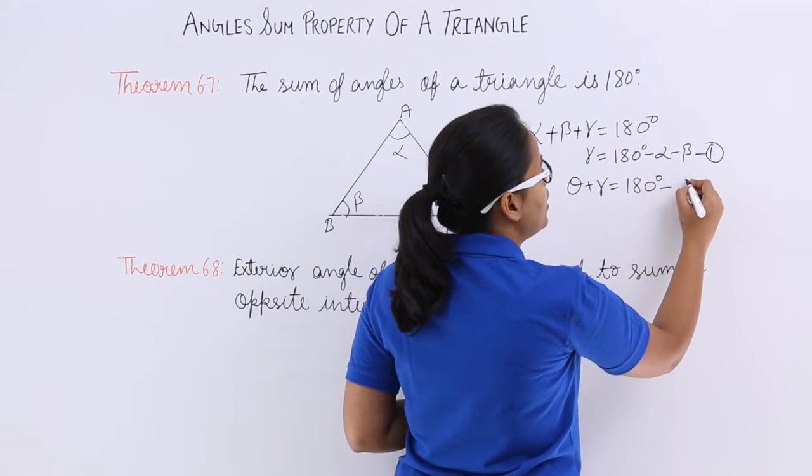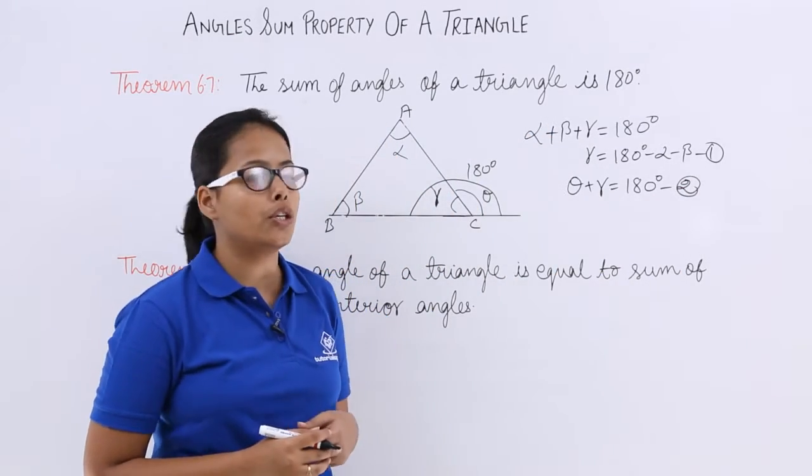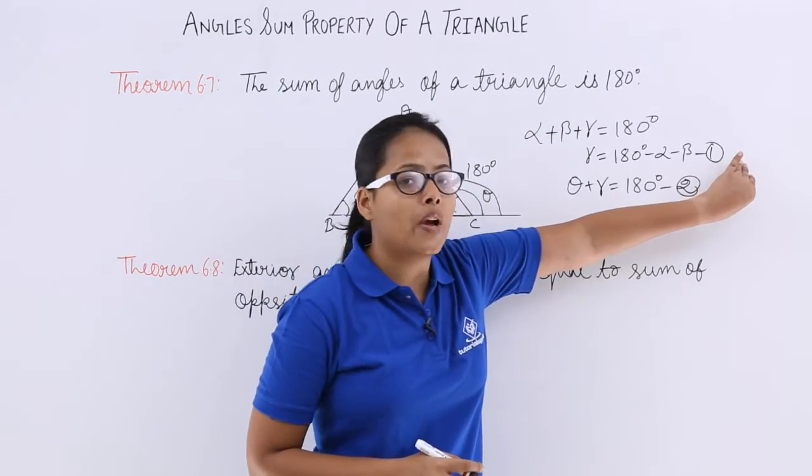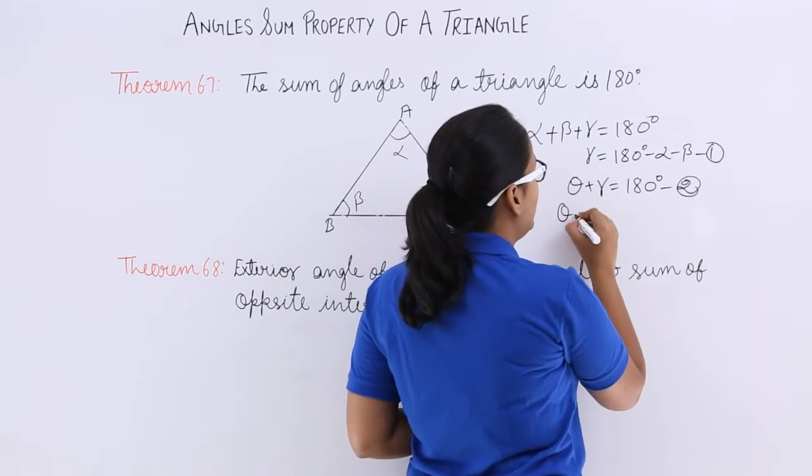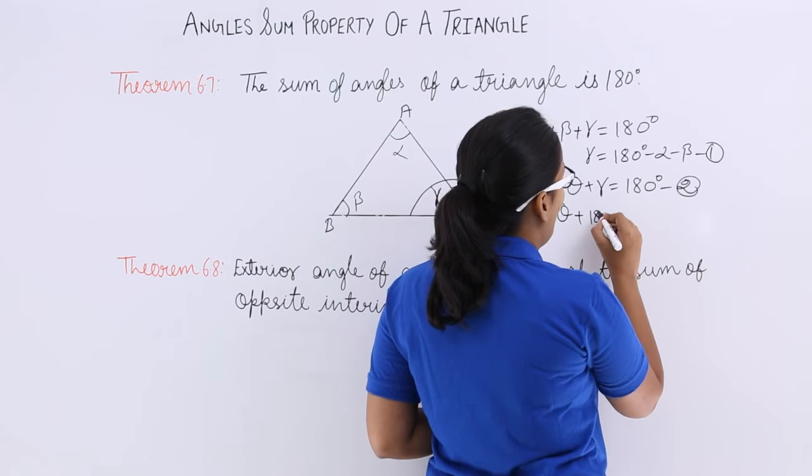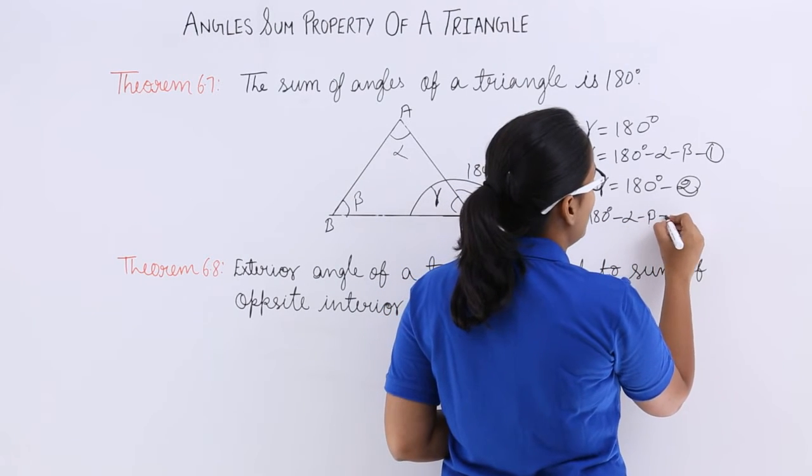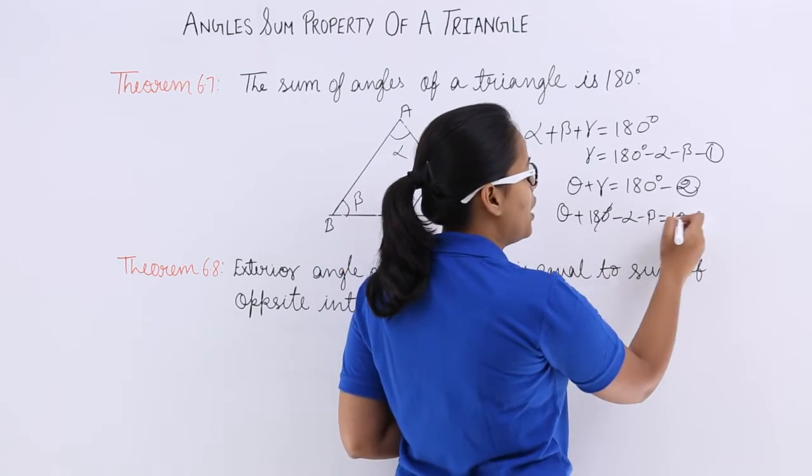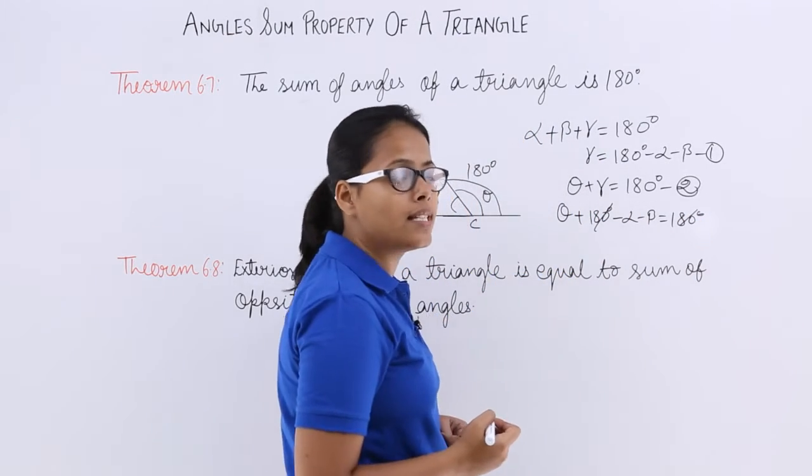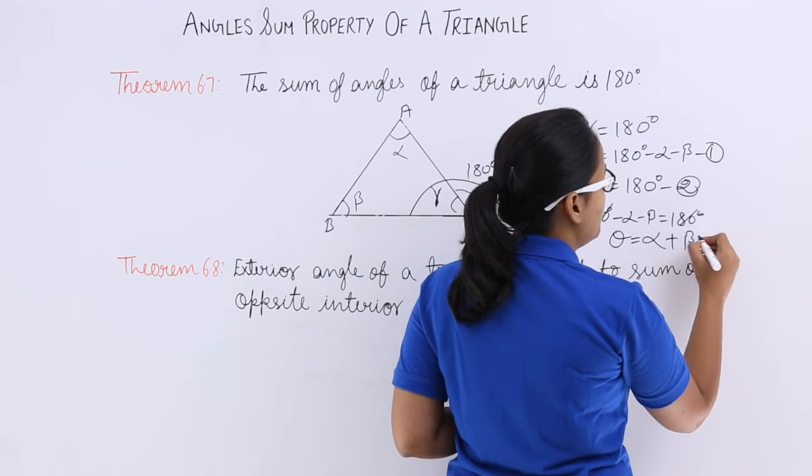You can name this equation as equation 2. Now substitute value 1 in this equation. Theta plus 180 minus alpha minus beta equals 180 degrees. From here you can see 180 degrees will get cancelled out and theta will equal alpha plus beta.